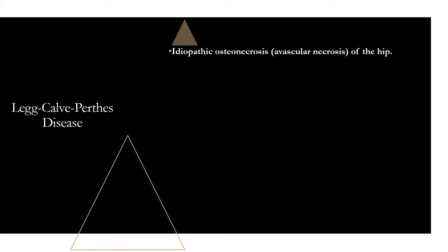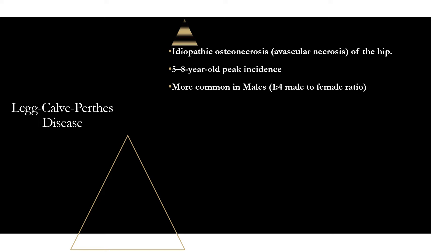Legg-Calvé-Perthes disease is idiopathic osteonecrosis, or avascular necrosis, of the hip — the blood supply to the femoral head gets disrupted, leading to tissue death. We generally don't know why this happens. The age range to look for is 5 to 8 years old, though it can occur from ages 3 to 12. It's much more common in males — a 4:1 male-to-female ratio.